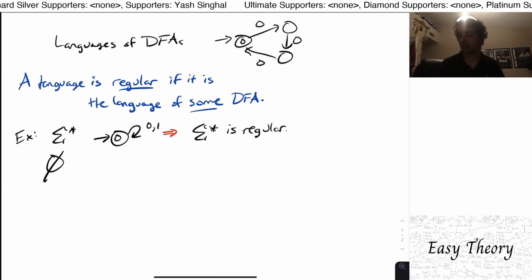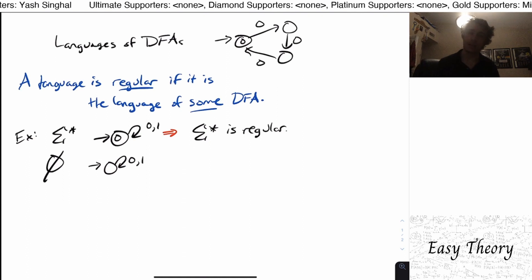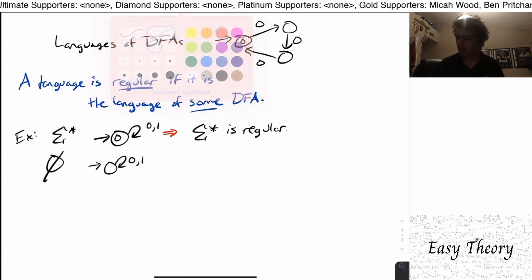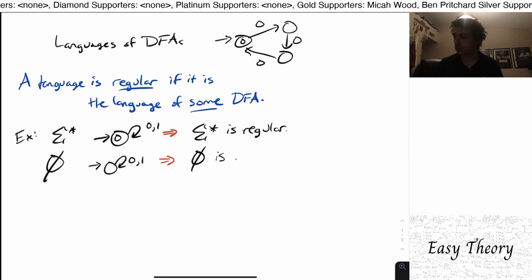On the opposite end of the spectrum, if we have the empty set, we can do almost the identical operation that we did with the DFA we had before, but instead we make it non-final. And clearly, since there is no final state here, therefore we will never accept. And this implies that the empty set is also regular.